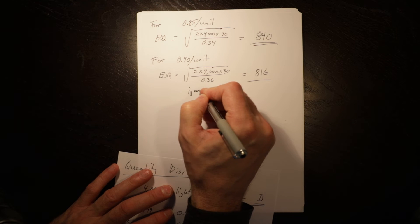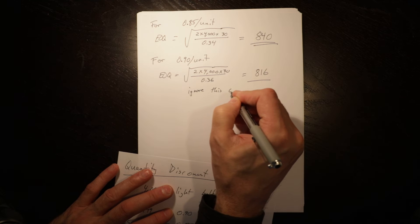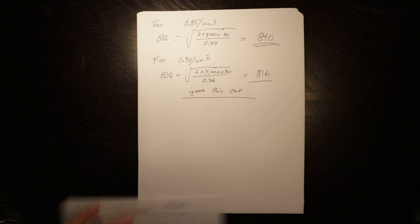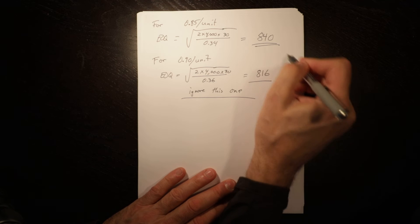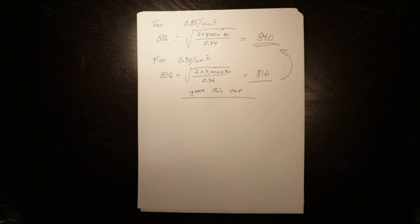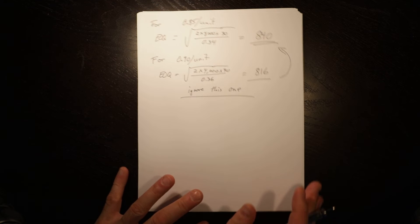The economic order quantity for 90 cents per unit is 816, which is sufficiently high to get them for 85 cents per unit, so we can ignore this one. The optimal order quantity is big enough that it will get us the discount, so this one becomes moot.